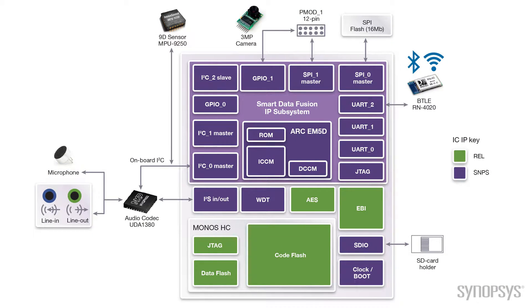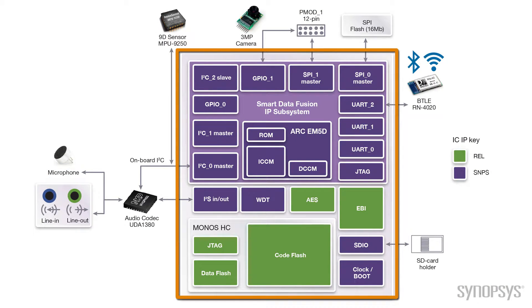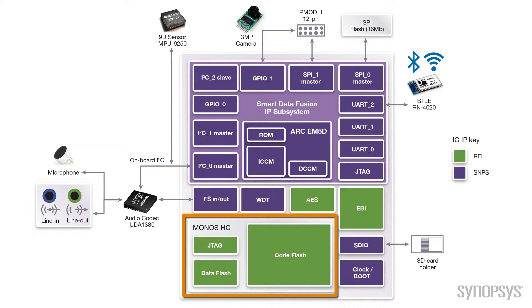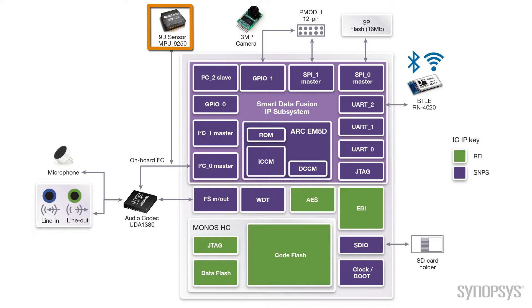These types of always-on functions are required in most of today's IoT applications. The demo platform includes a silicon-based MCU with an integrated ARC EM5D based smart data fusion subsystem and 2 megabytes of Monos embedded flash. The EM5D processor provides the DSP capabilities required for processing the always-on functions. The 2 meg of embedded flash provides memory storage for both application code and data. The tightly coupled peripherals provide connectivity to board-level functions such as the 9D sensor device, the Bluetooth controller, and the audio codec and interfaces.